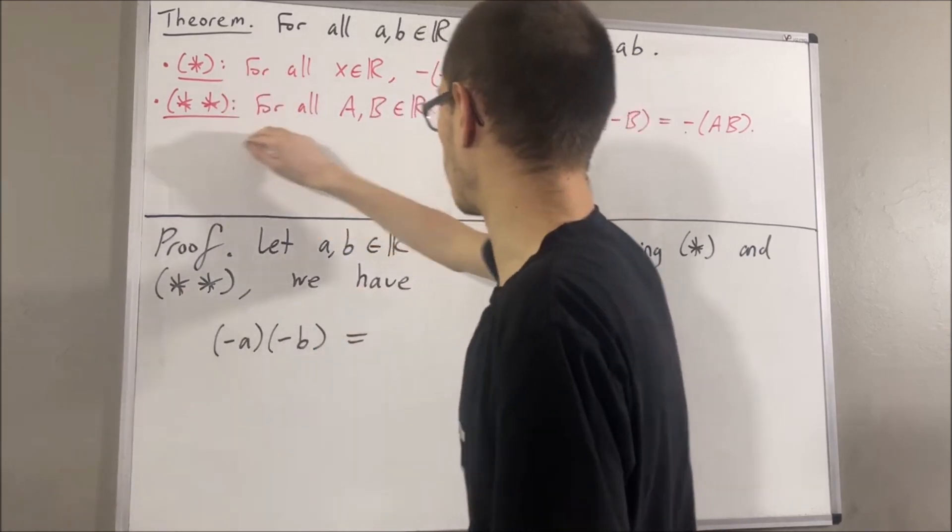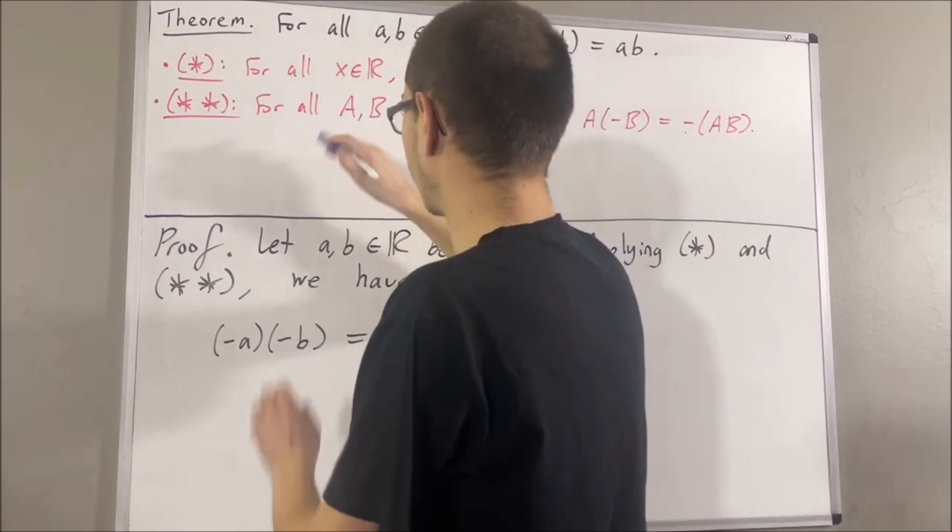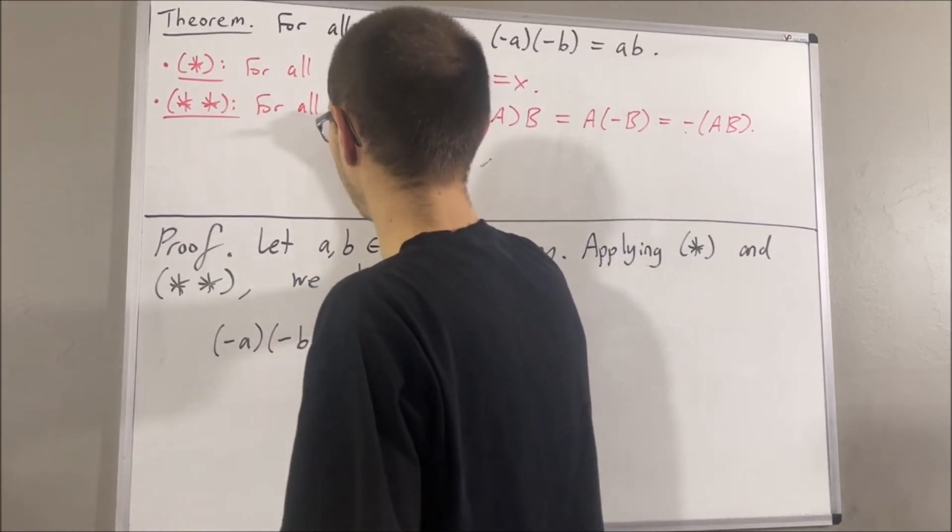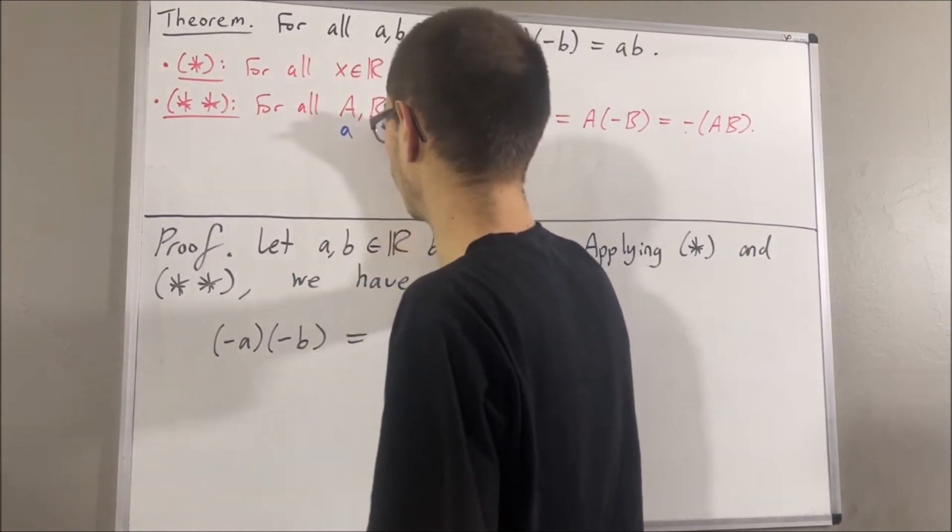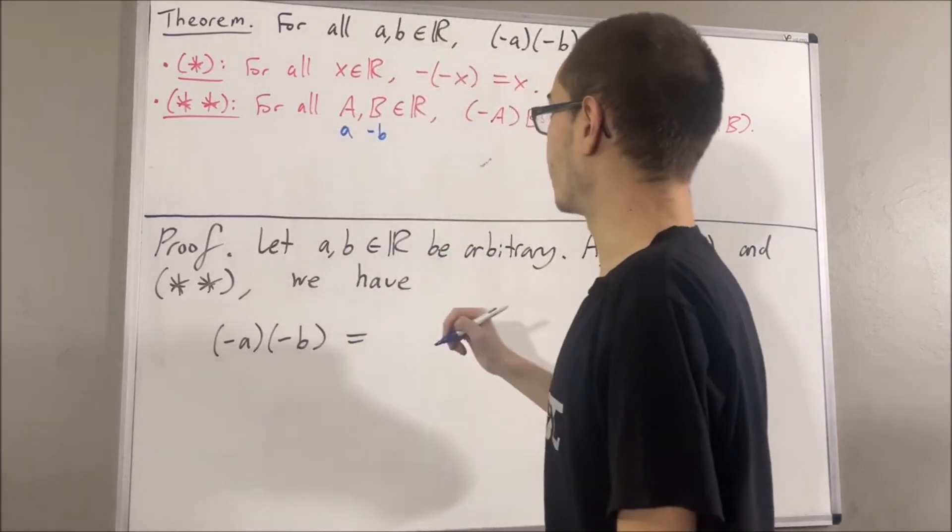First of all, if we apply star star, we're going to take capital A to be A, and we're going to take capital B to be the negative of B. Well, in that case,